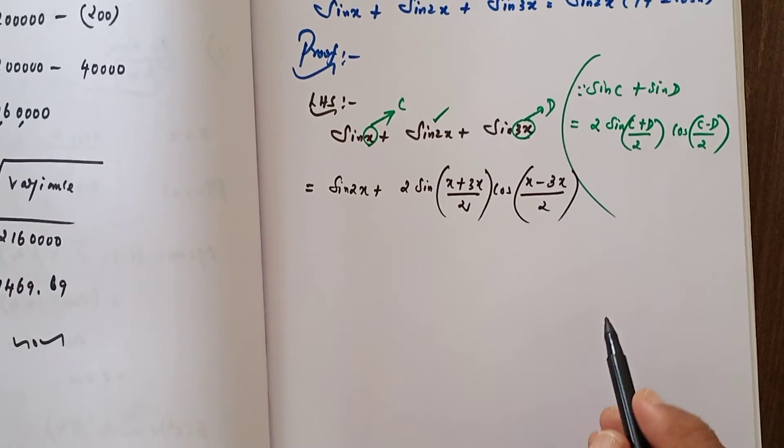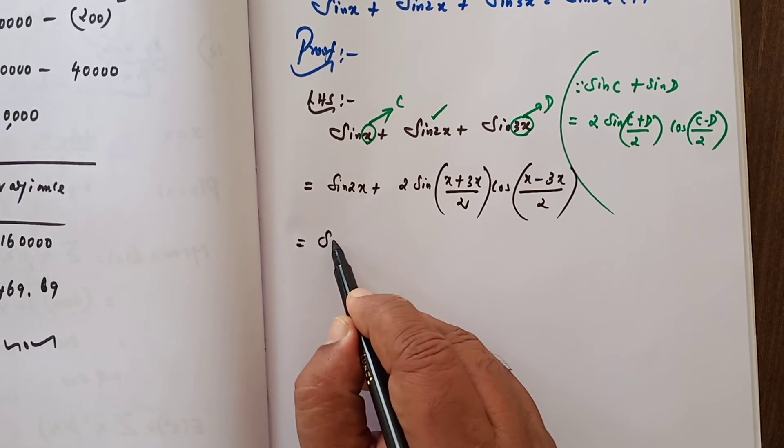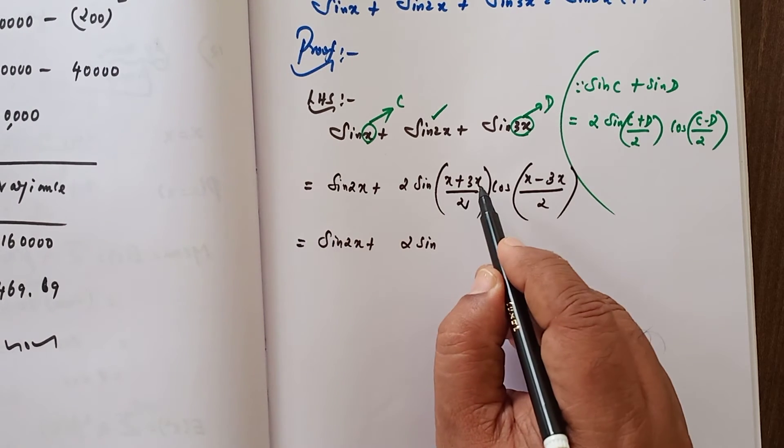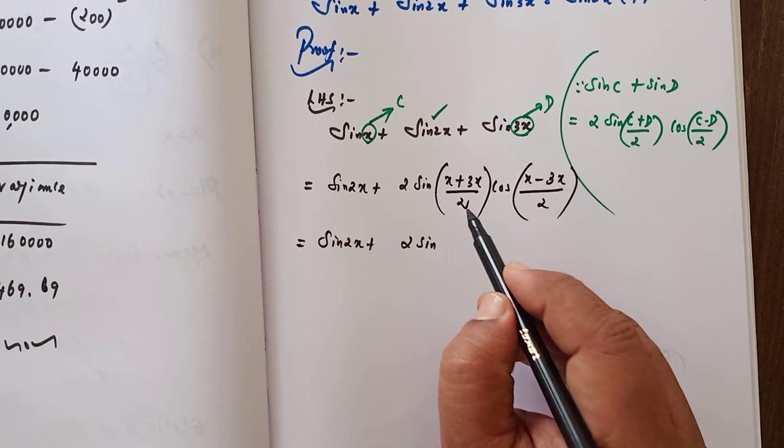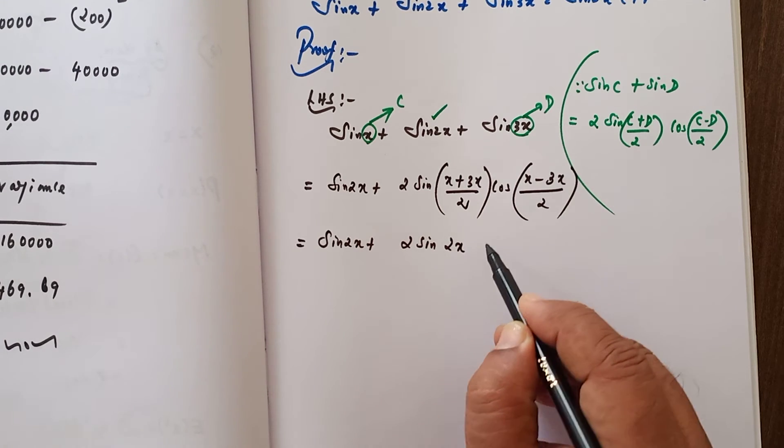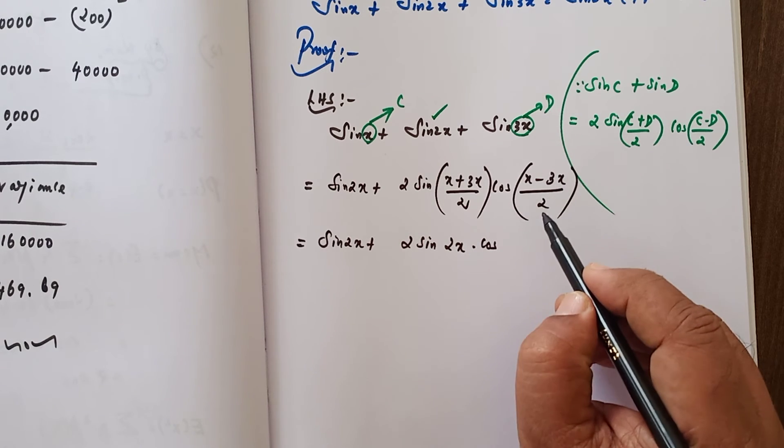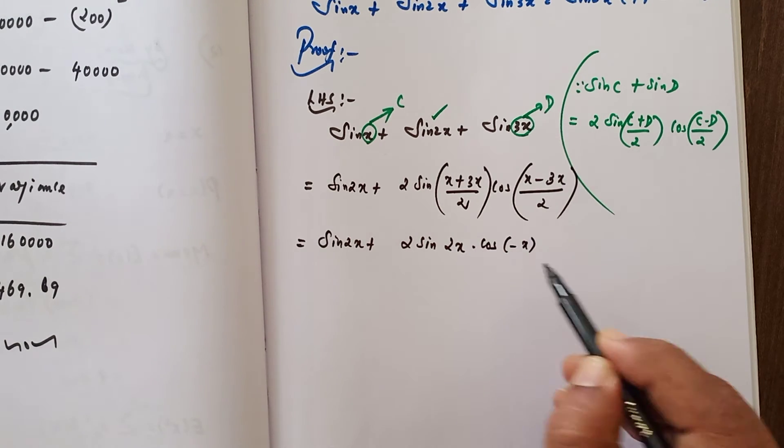Now we have to simplify. That is equal to sin 2x as it is, to sin of x plus 3x which equals 4x, 4x by 2 equals 2x. That is equal to cos x.